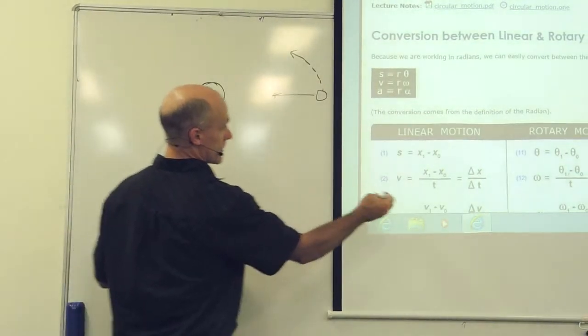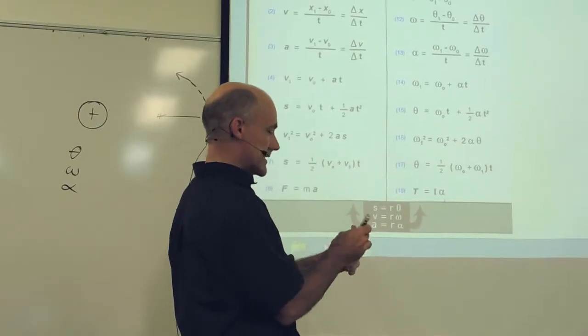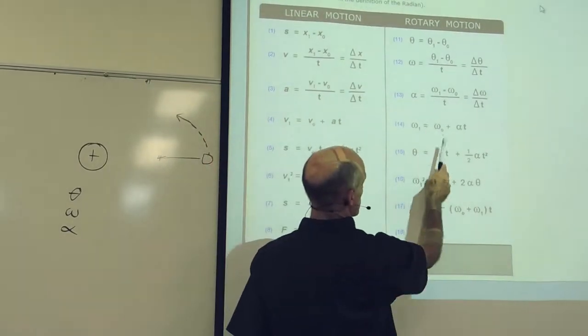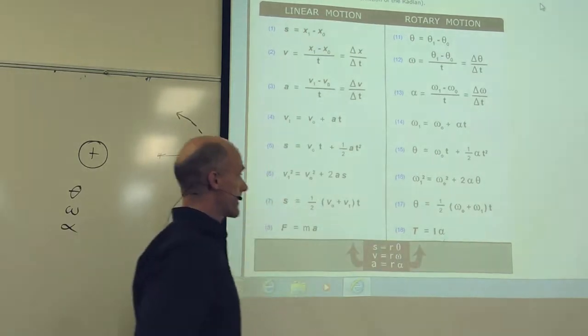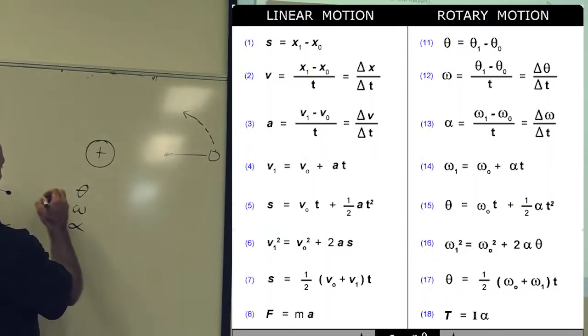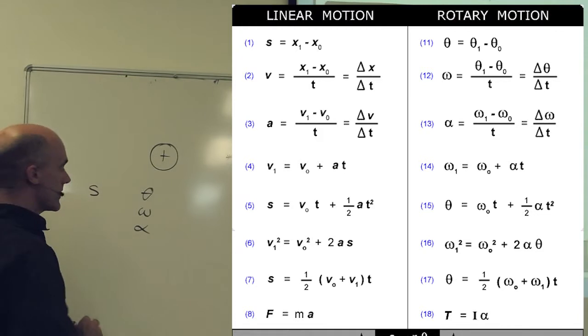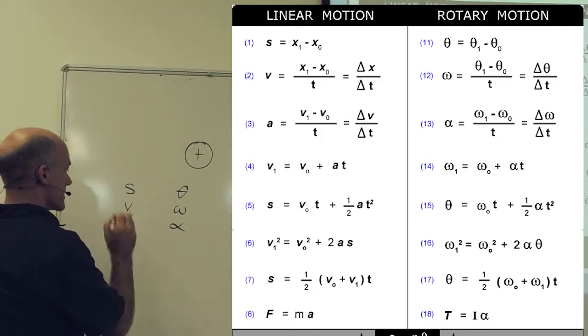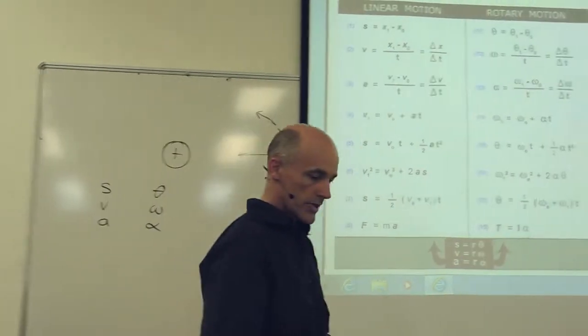We'll still have the same formulas like we have here. So this chart is exactly the same. We have our linear motion formulas here and the equivalent rotary motion formulas alongside. And angle is still the equivalent for displacement. Angular velocity is the equivalent for velocity. And angular acceleration is the equivalent for acceleration. So there's no change.